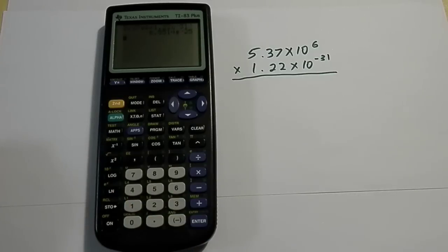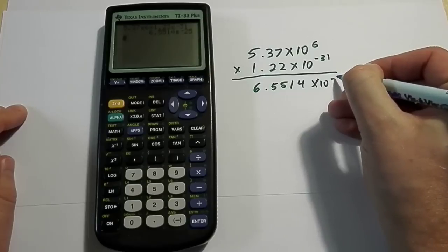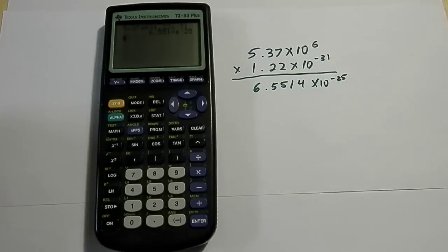Now I can hit enter and the answer on my display comes up as 6.5514 times 10 to the negative 25. On the calculator it shows as E negative 25, but that means times 10 to the negative 25.